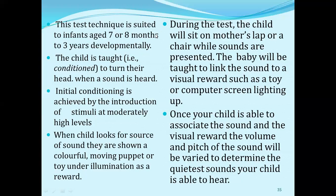During the VRA test, the child sits on the mother's lap or in a chair while sounds are presented. The baby is taught to link the sound to a visual reward such as a toy or a computer screen lighting up. Once the child can associate the sound with the visual reward, the volume and pitch of the sound are varied to determine the quietest sound the child can hear.